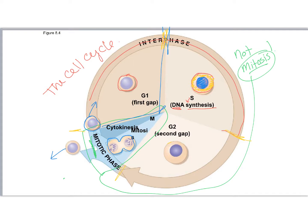The second phase we look at is the gap two phase, G2. We're definitely getting larger, chromosomes are about ready to start condensing, and we're going to enter the mitotic phase — that little tiny cake slice. Mitosis is the process where we take that single cell and split it into two daughter cells, and then we finish up with cytokinesis at the very end: the true splitting of the cell into two new cells as they begin their life as individuals.